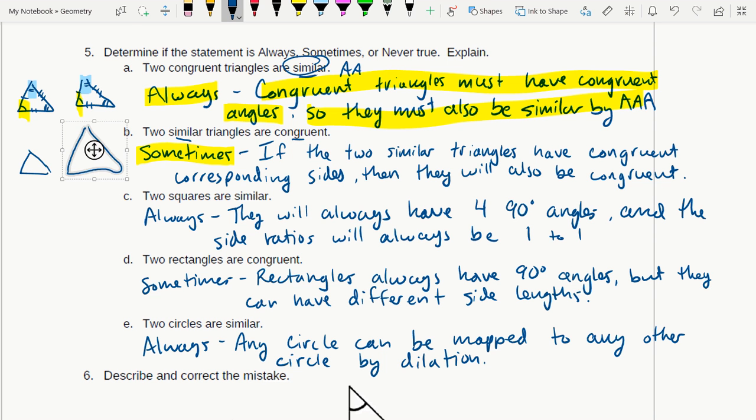However, I could also have - if I'm slightly dilated - now these could be similar. They could have all the same angles, but they're clearly not congruent. So there are some times when they are similar and congruent, but it can also be similar without being congruent.